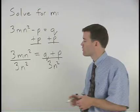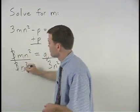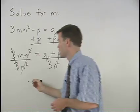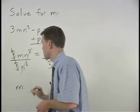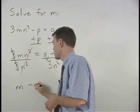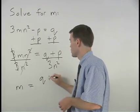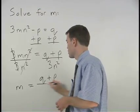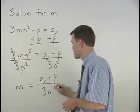On the left, the 3s cancel and the n squareds cancel and we're left with m. On the right, we have q plus p over 3n squared.